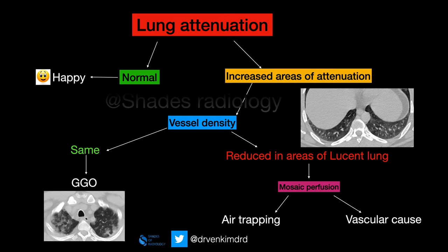Once you take a CT chest of the patient, look at the lung attenuation in the entire lung. If the attenuation of the lung is completely normal and uniform in all areas, then both the patient and we will be happy as the lung looks normal. But what if there are increased areas of attenuation?